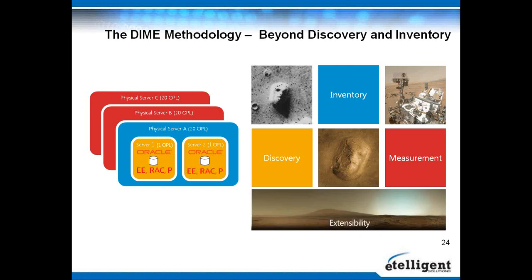The last piece is Extensibility. Once we've completed the measurement process, we want to do other things with that data. Similar to a Mars lander forwarding collected data back for analysis, we take the rich and accurate data we've gathered for license requirements and push it upstream to Intelligent Solutions' Complex License Analyzer. That's what we mean by extensibility.